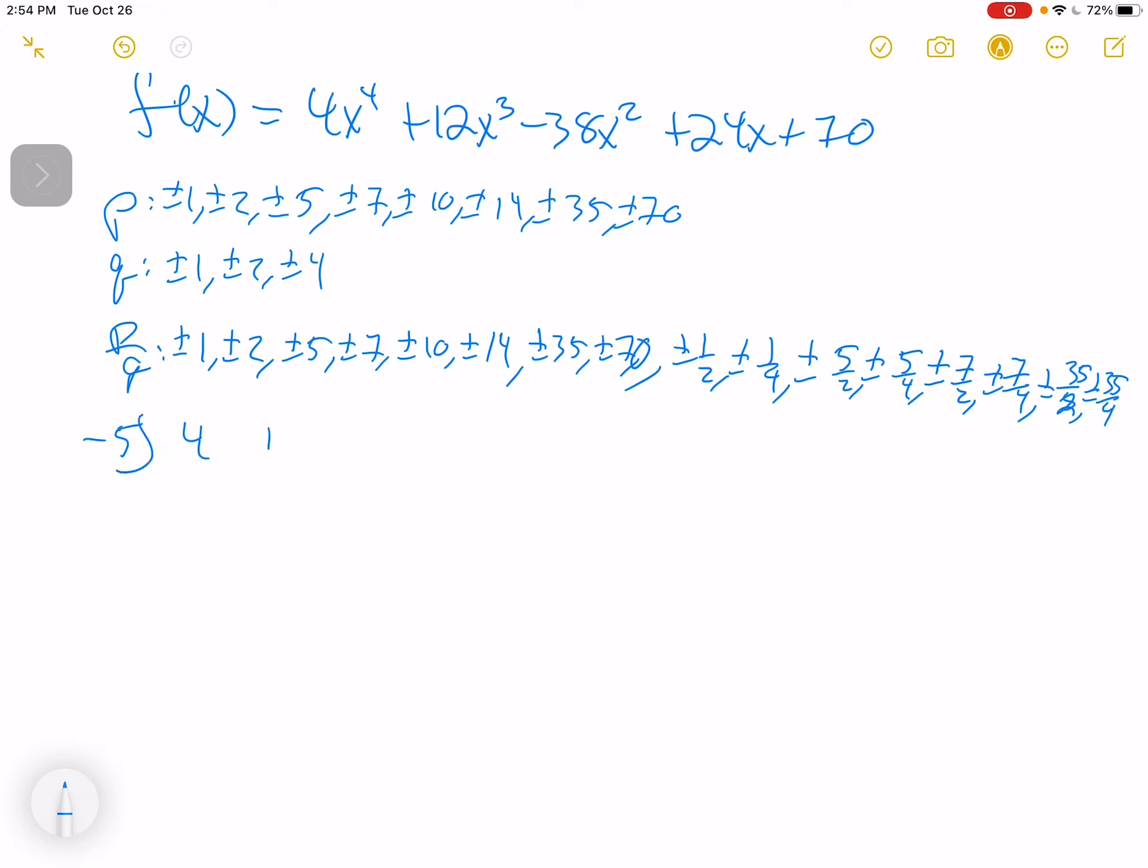Our 4, our 12, our negative 38, our 24, and our 70. So that's 4. Negative 5 times 4 is negative 20. I've got a negative 8. I've got a positive 40. I've got a 2. I've got a negative 10. That's a 14. Then I've got a negative 70. So that's a 0. Hey, look, negative 5 is a 0.